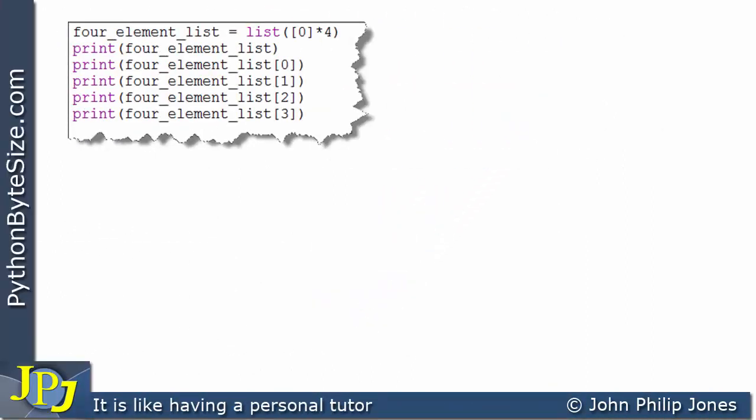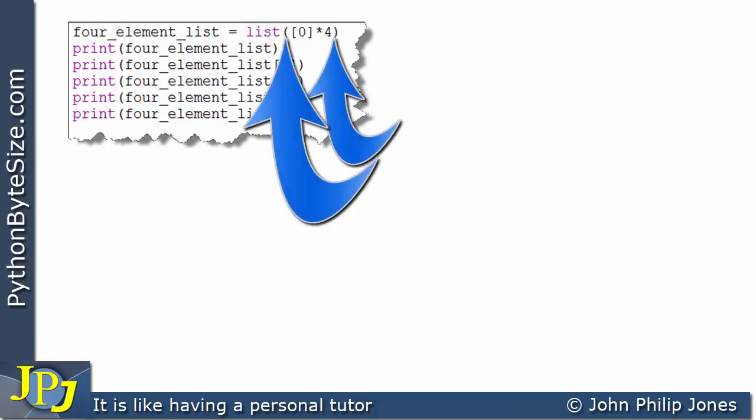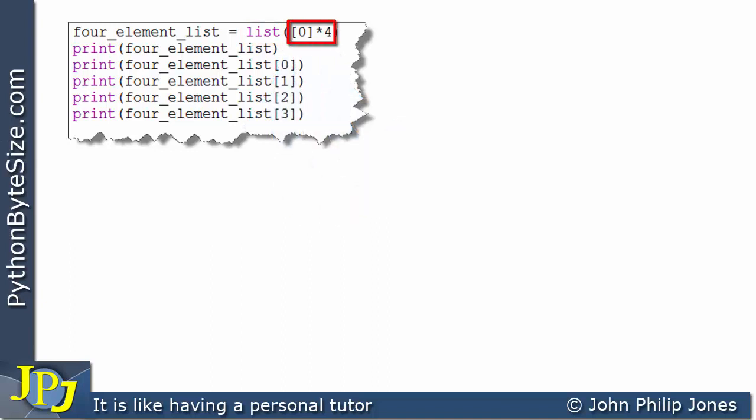Now let's consider this computer program. I've made a change to the first line of the code. Otherwise, it's exactly the same as the one we've just observed. The difference is shown here. You can see I have the word list. That's emphasizing to me that I'm going to be creating an instance of the list class. I've had to add these two brackets here. Within the brackets, you can see I have the square brackets with a zero. This is the repetition operator, meaning we're going to have four of these within the list.